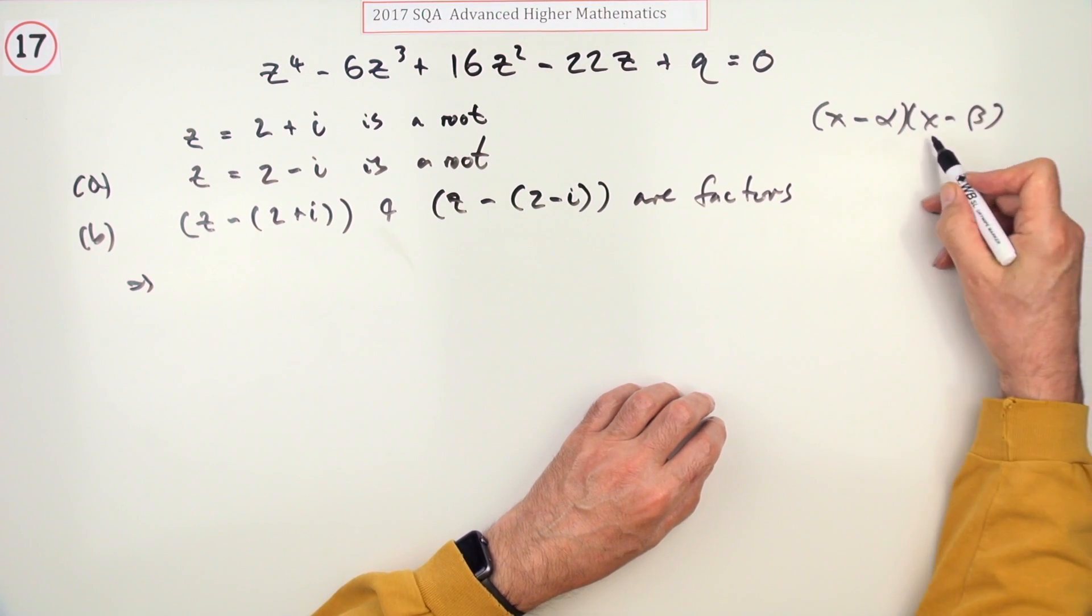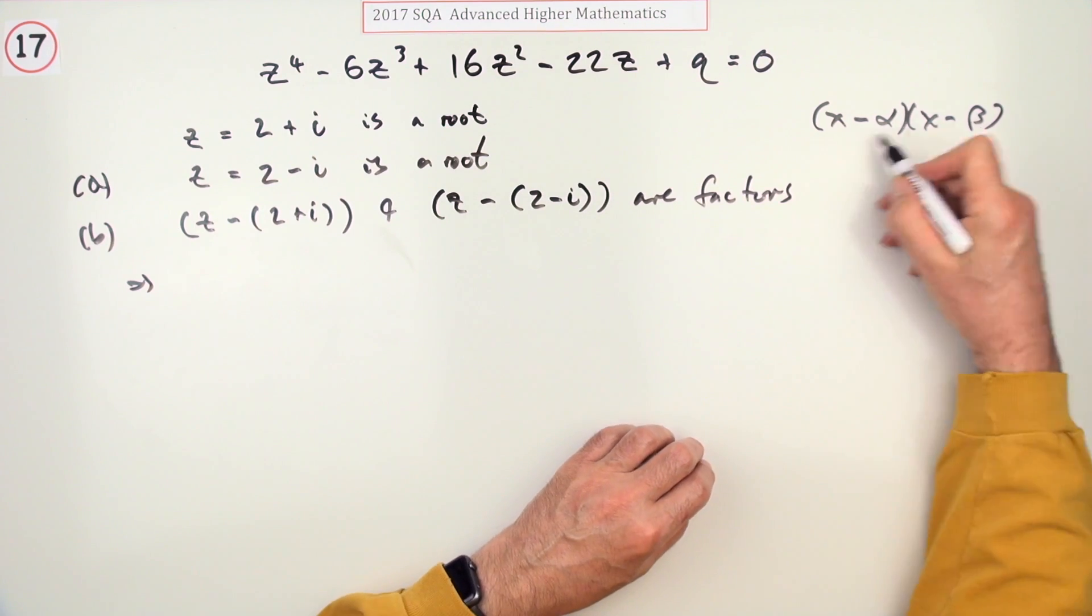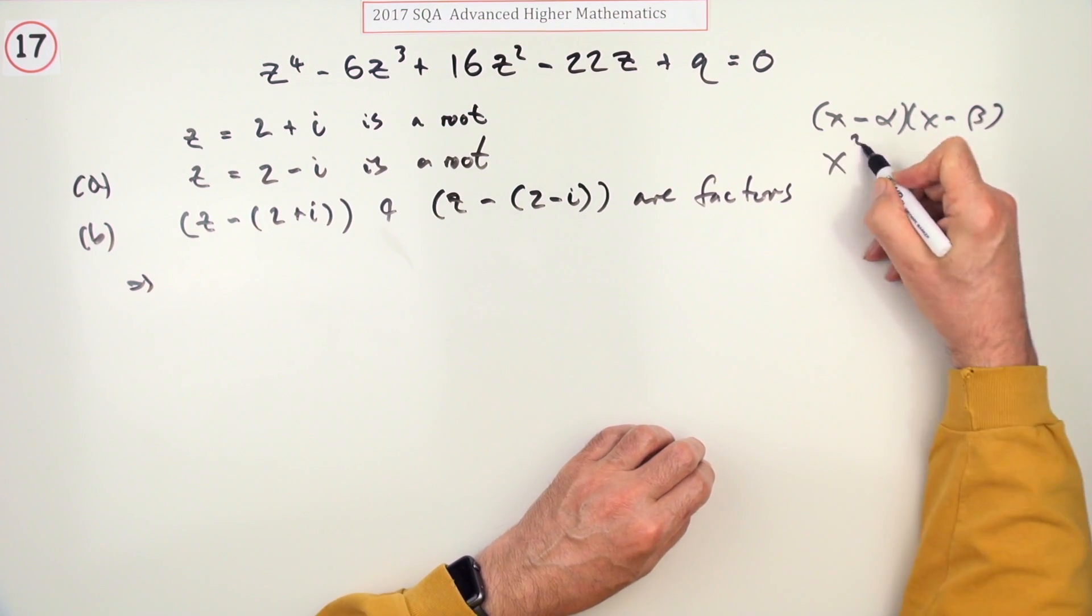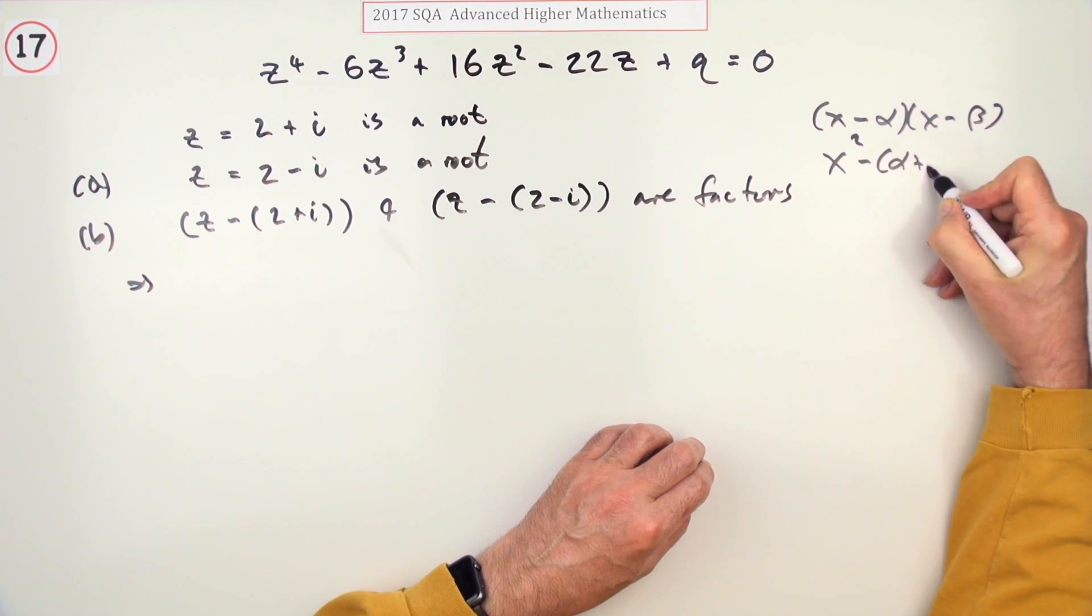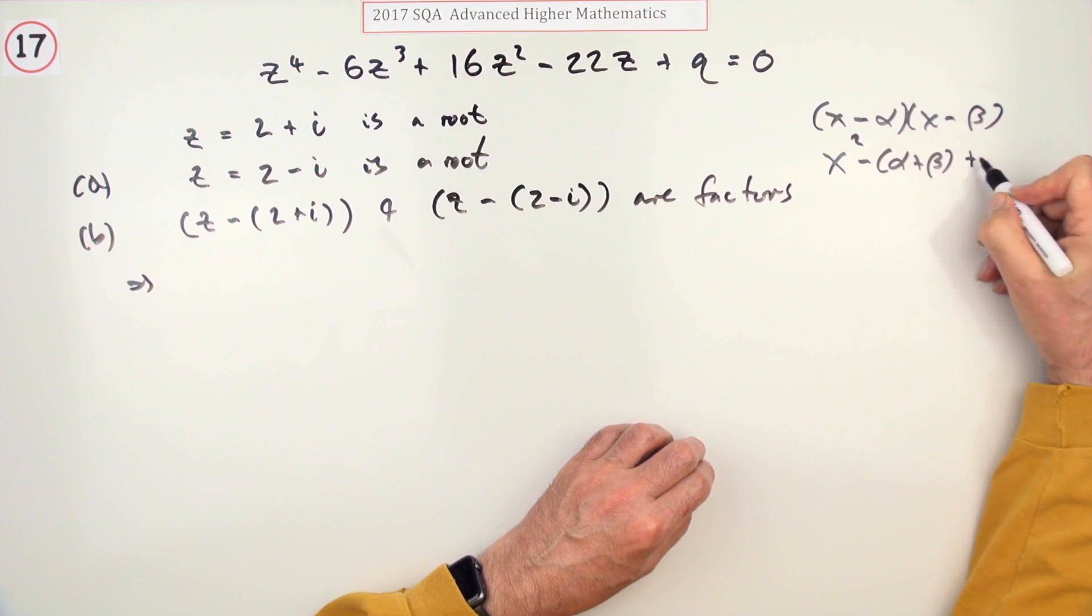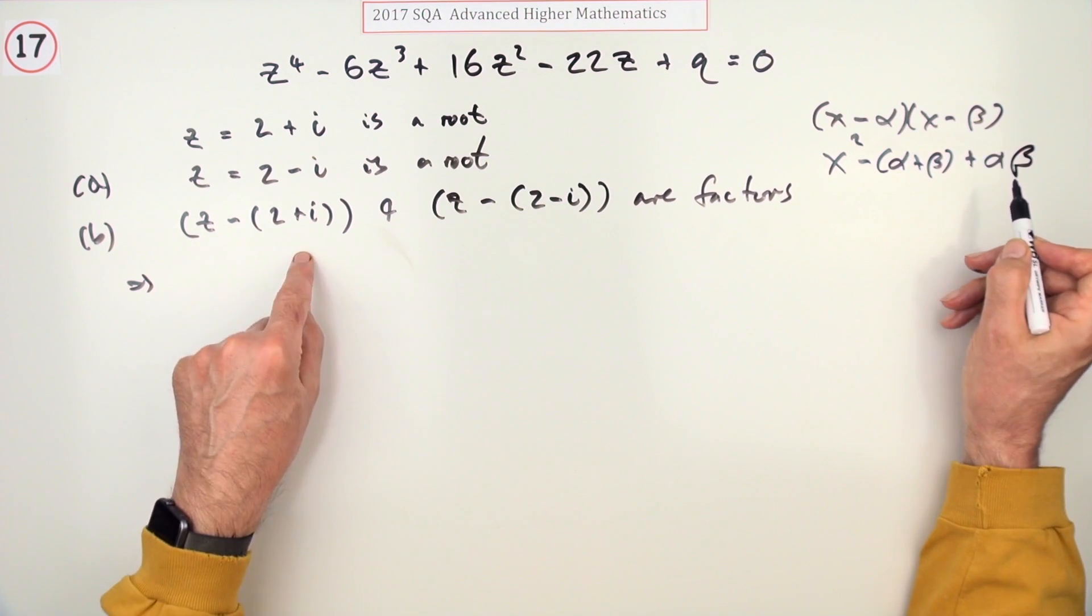So x - α and x - β form the two factors. Multiplying that out gives you x² minus the sum of the roots plus the product of the roots. That's especially easy with these complex numbers.